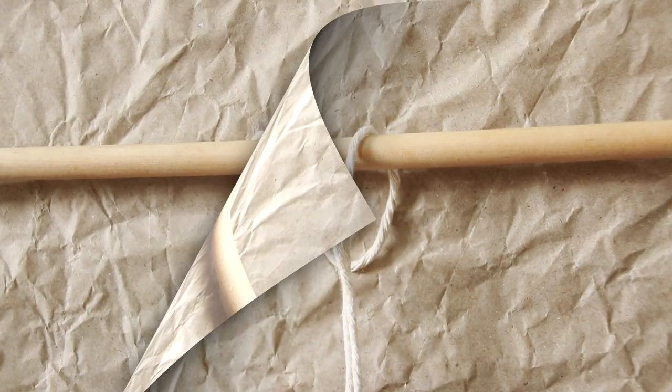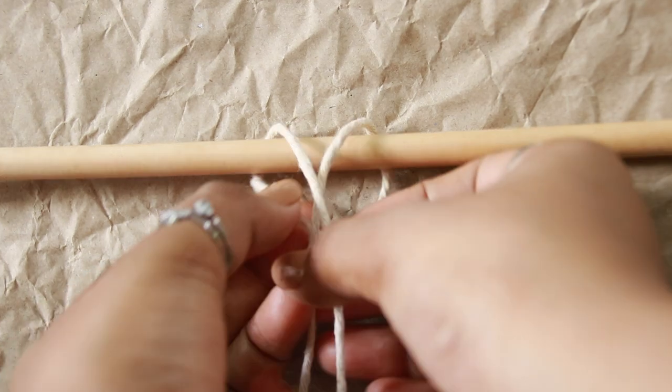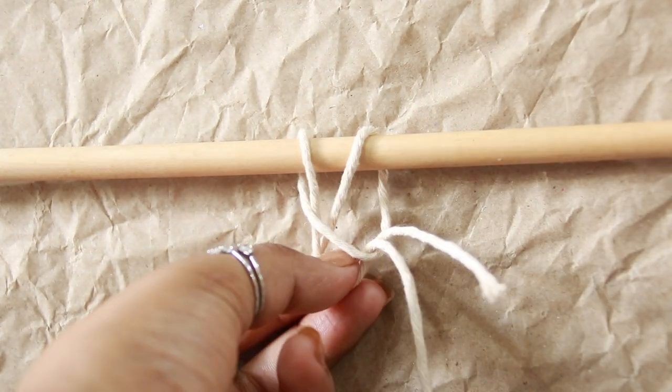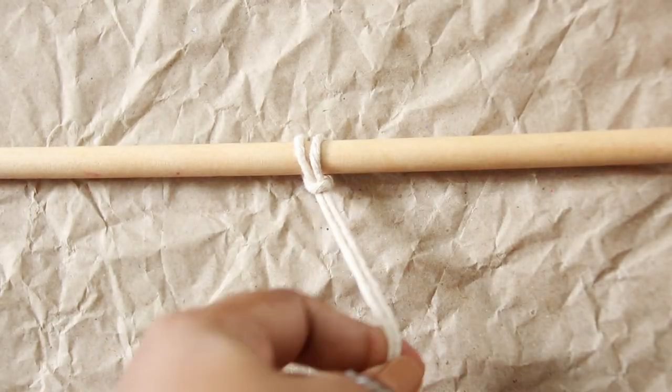From top, slide your loop behind the wooden dial. Drop the tail ends in front over the dial. Simply pull the tail ends through the loop from back and secure it tightly.